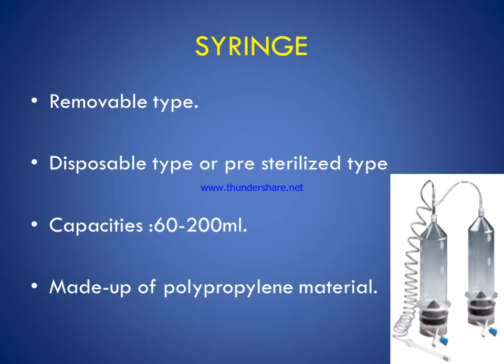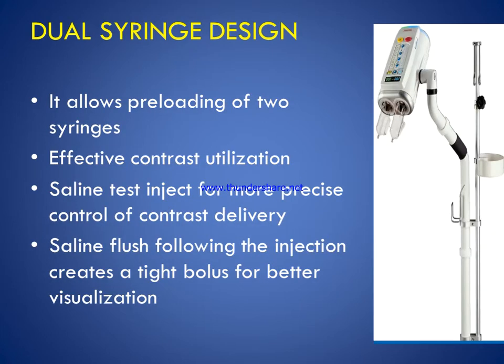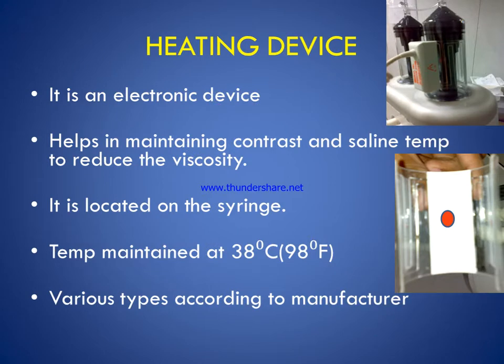The syringe capacity ranges from 60 to 200 ml and is made of polypropylene. There are dual syringe designs which allow pre-loading of two syringes, helping in effective contrast utilization. The saline test injection allows more precise control of contrast delivery, and saline flushing following the injection creates a tight bolus for better visualization.